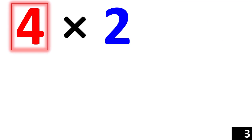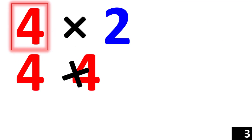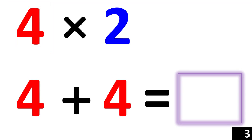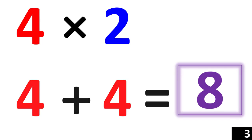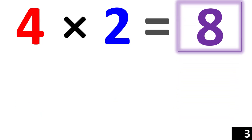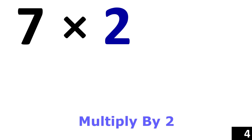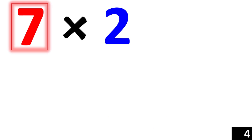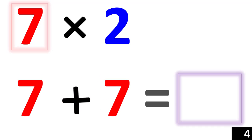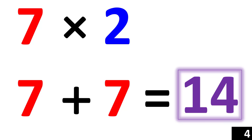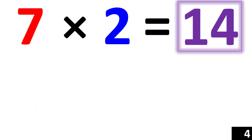4 times 2 is the same thing as 4 plus 4. 8. So 4 times 2 equals 8. How about 7 times 2? 7 times 2 is the same thing as 7 plus 7. 14. So 7 times 2 equals 14.